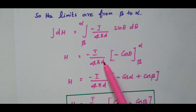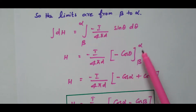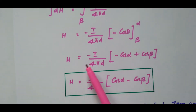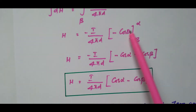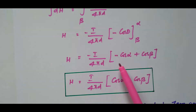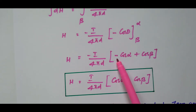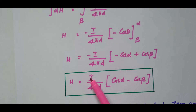Minus i divided by 4 pi d is constant and taken outside. The integral of sin theta is minus cos theta. Substituting the limits beta to alpha: H equals minus i divided by 4 pi d into [minus cos alpha minus (minus cos beta)], which gives minus cos alpha plus cos beta. Multiplying the negative symbol inside: H equals i divided by 4 pi d times (cos alpha minus cos beta). This is the final expression for magnetic field intensity due to a finite conductor.